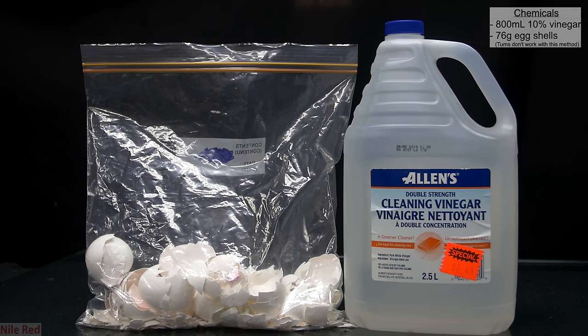I used in total about 76 grams of eggshells, and about 800 milliliters of the cleaning vinegar. I used slightly more eggshells than I needed, so there was an excess of calcium carbonate, which means that all of the acetic acid should be consumed, so when we do the boiling down step we don't boil acetic acid into the air.